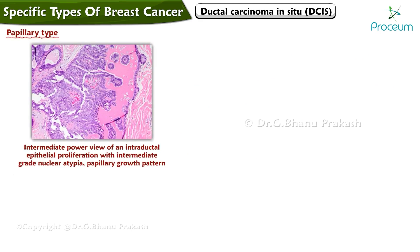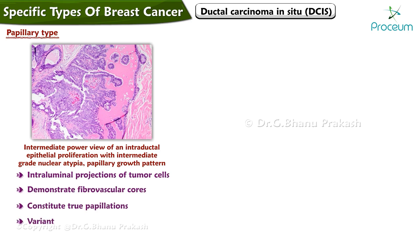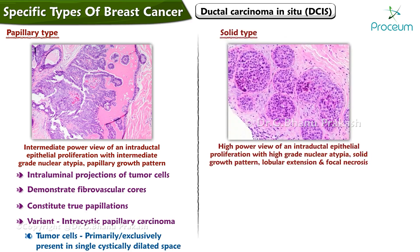The papillary type shows intraluminal projections of tumor cells that, in contrast to the micropapillary variant, demonstrate fibrovascular cores and thereby constitute true papillations. A variant of papillary ductal carcinoma in situ, intracystic papillary carcinoma, is characterized by tumor cells that are primarily or exclusively present in a single cystically dilated space.